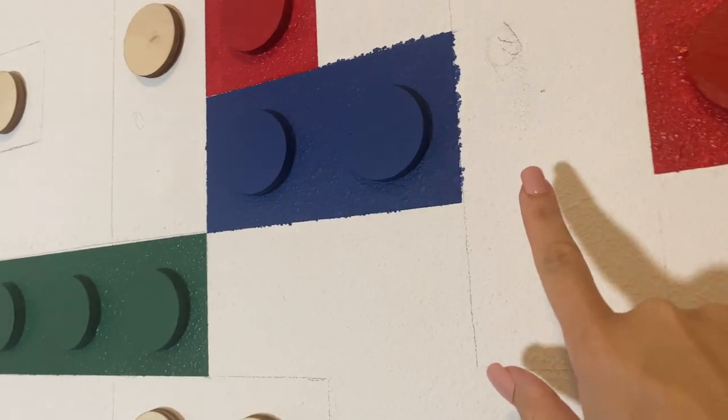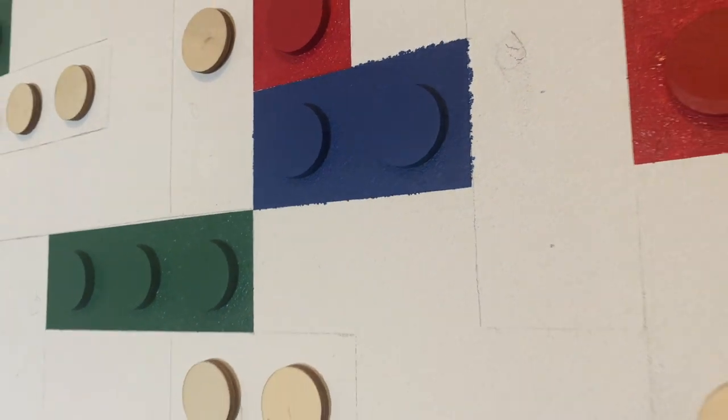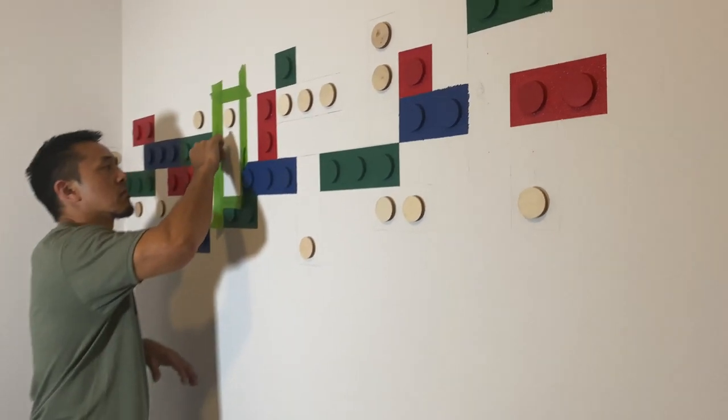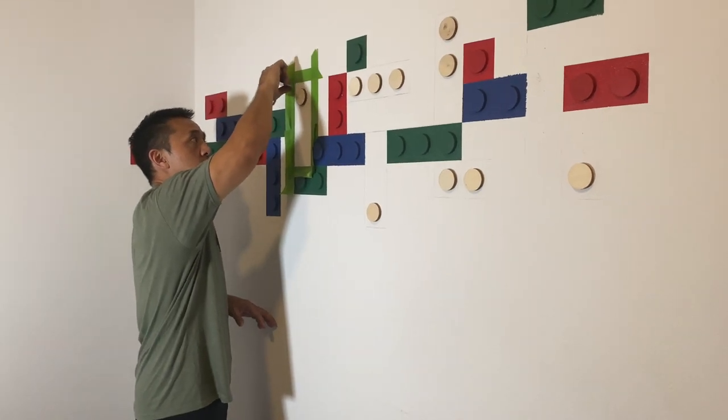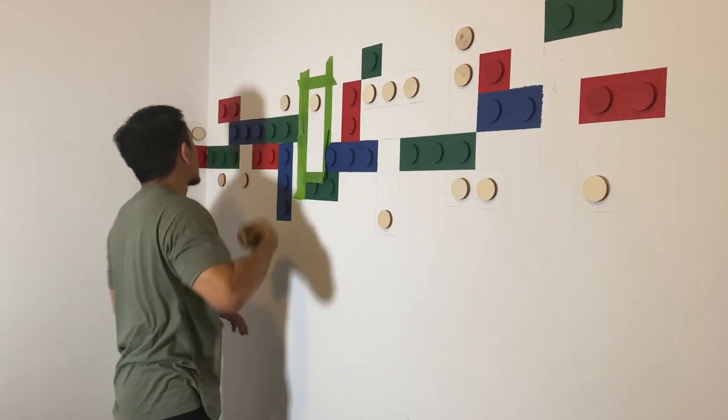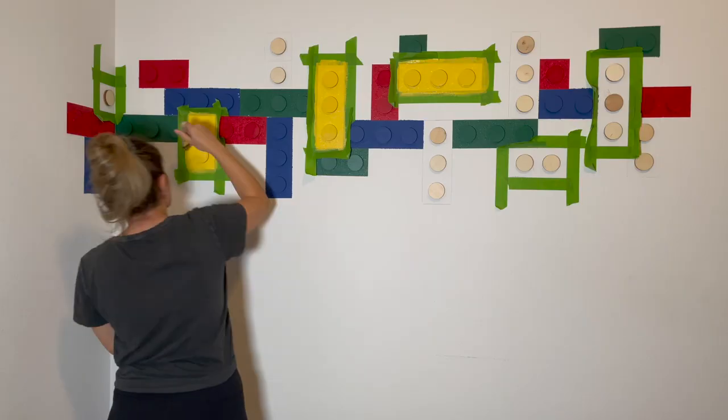So unfortunately some of the paint started bleeding, as you see. I think because my husband didn't run a credit card over the frog tape. So you want to make sure you are using frog tape and also you are running a credit card over the tape, because the blocks are literally next to each other.